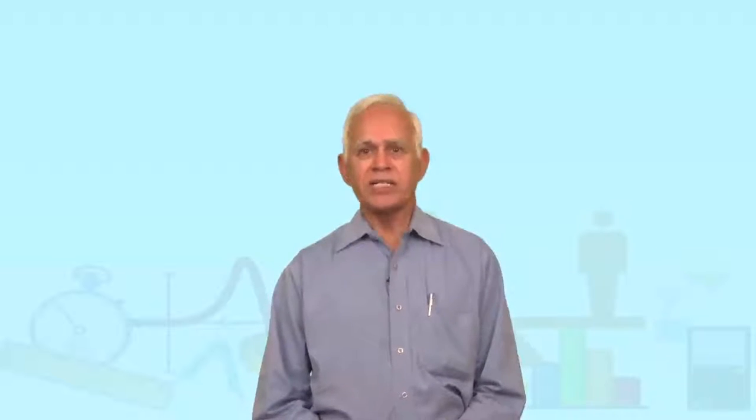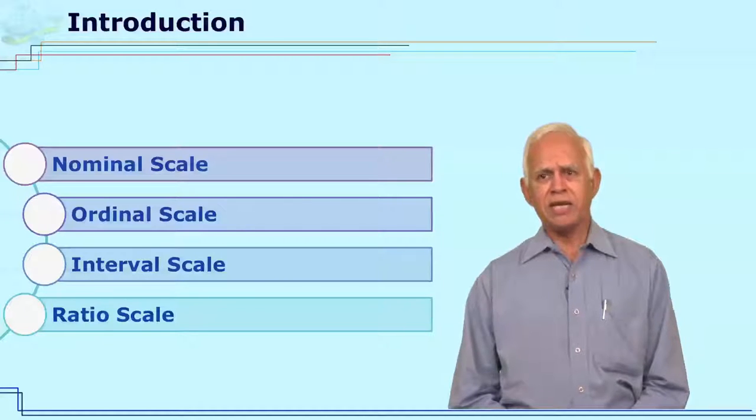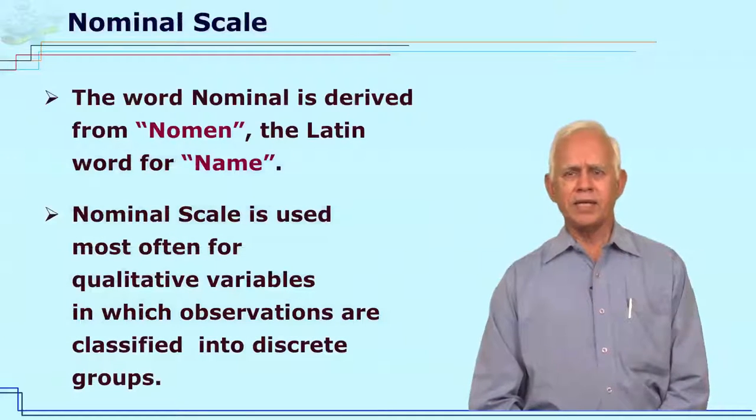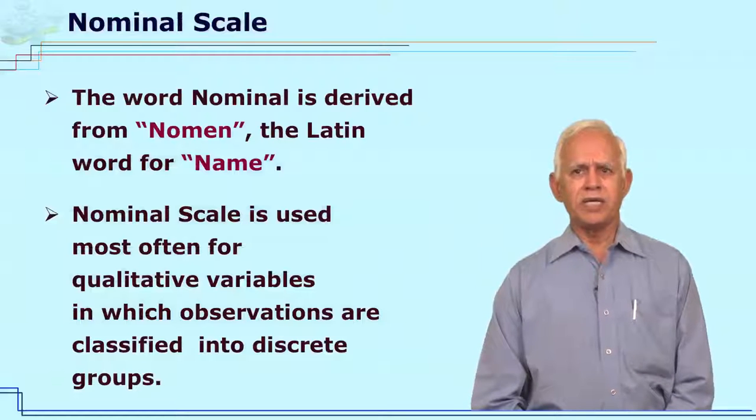You might be interested in knowing who gave measurement scales. The measurement scales were given by a psychologist whose name was Stanley Stevens, and he gave the measurement scales as nominal scale, ordinal scale, interval scale, and ratio scales. Let us understand the nominal scale.